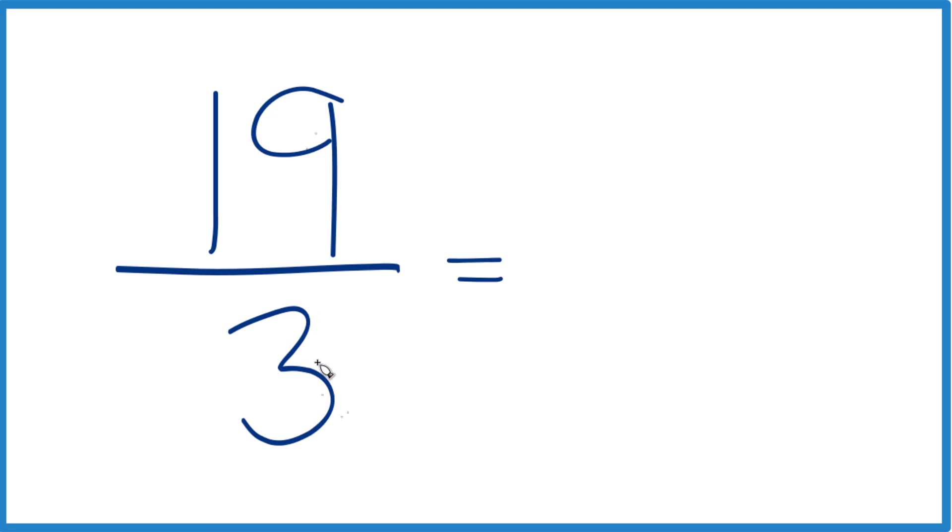3 goes into 19, 6 times 3 is 18 with 1 left over, bring that 3 across, and 19 thirds, that equals the mixed number 6 and 1 third.